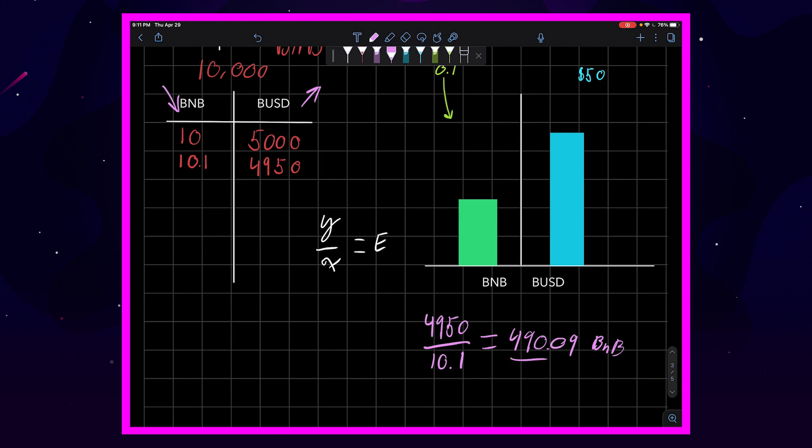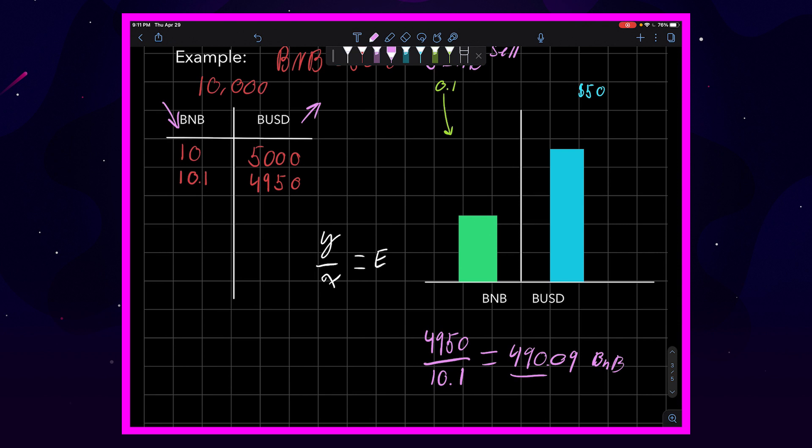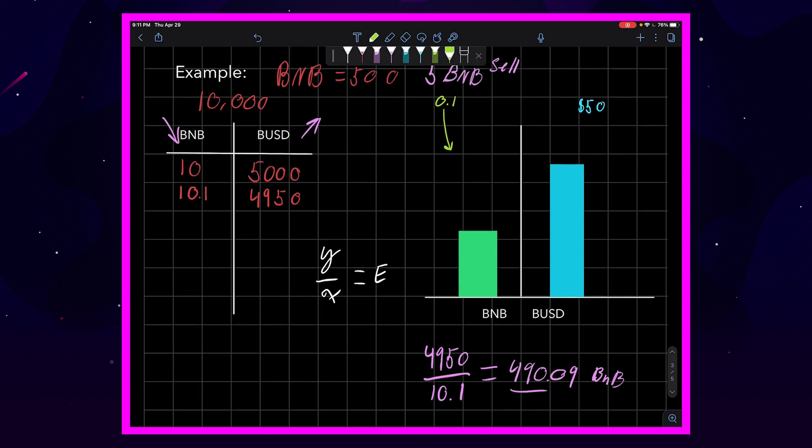That is the price per BNB. So we can see that's a $10 change in the price of BNB based on the very small amount of BNB that we put into the pool.